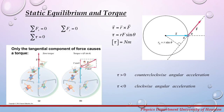Torque is also known as a moment of force. By definition, it is a tendency of a force to cause a rotation of an object. The torque is a cross product of r and F, where r is the distance from the axis of rotation to the point where the force is applied, and F is the force. Furthermore, torque is equal to r·F·sin(θ), where r is the distance from the axis of rotation to the point where the force is applied, F is the magnitude of the force, and θ is the angle between F and r.